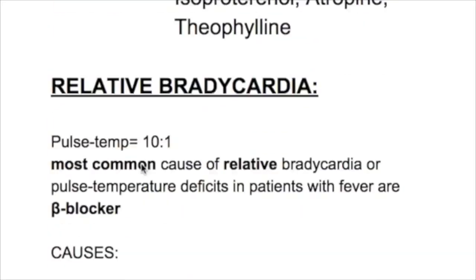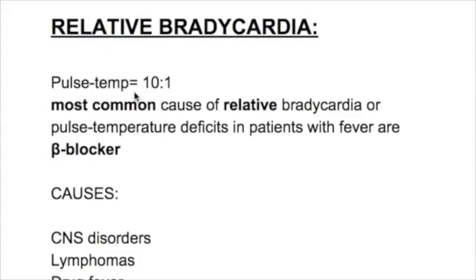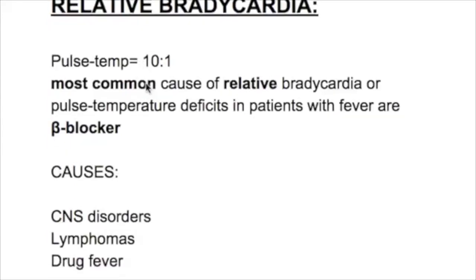What is relative bradycardia? The pulse-temperature ratio is 10 to 1, meaning that if temperature rises by 1 degree, the heart rate normally increases by 10. In certain conditions, the heart rate does not increase by that expected amount — this is called relative bradycardia.